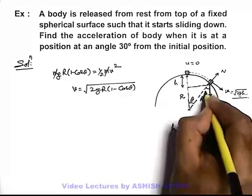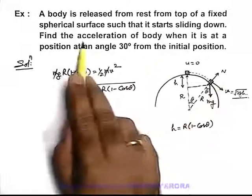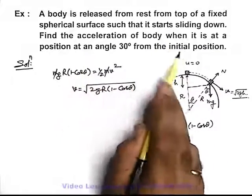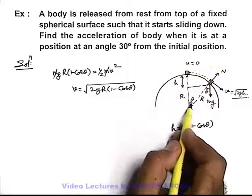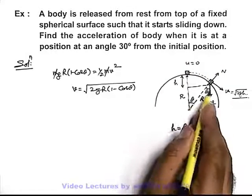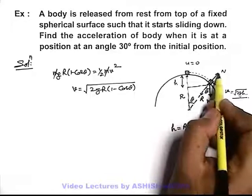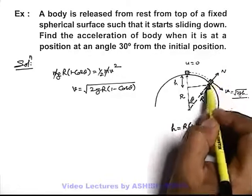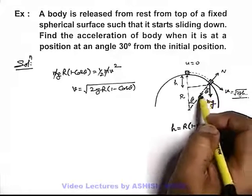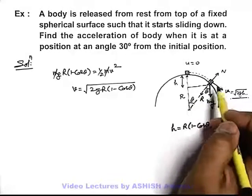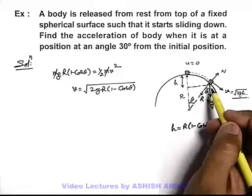This angle is theta. We are required to find the acceleration of the body when it is at a position at an angle 30 degrees from the initial position. So if theta is 30 degrees, we can say in this situation the normal reaction plus the centrifugal force on it equals mg cos theta or mg cos 30, but we don't need to use those relations.